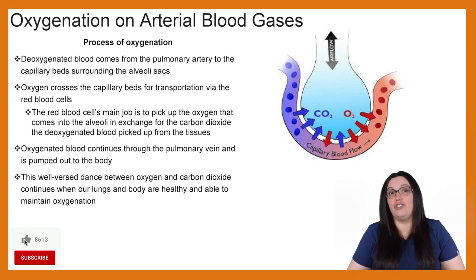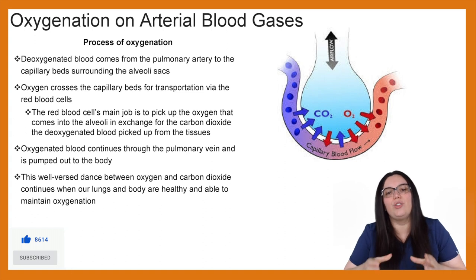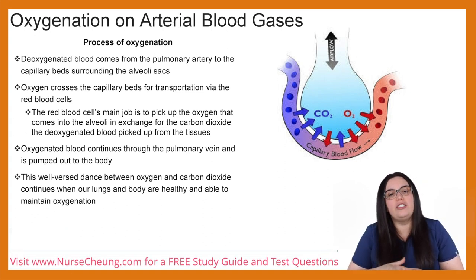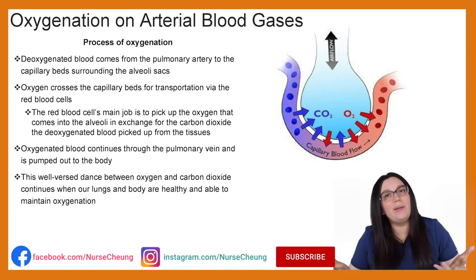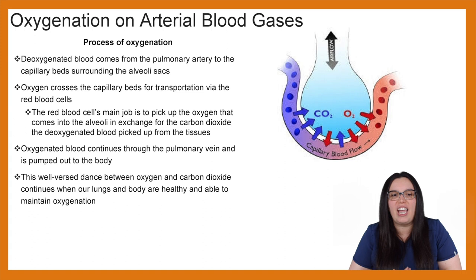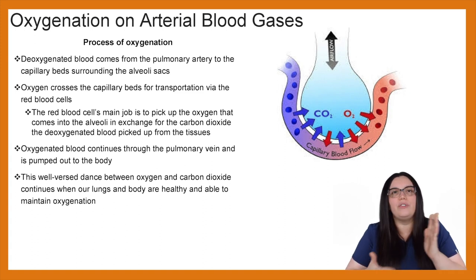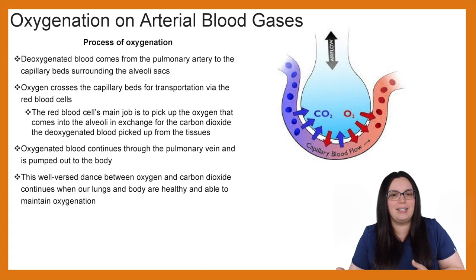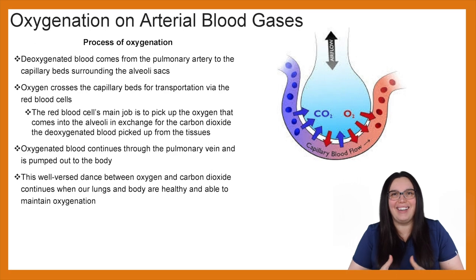Let's talk about the process of oxygenation. Deoxygenated blood comes from the pulmonary artery to the capillary beds surrounding the alveoli sac. Oxygen crosses that capillary bed via transportation of the red blood cells. The red blood cell's main job is to pick up that oxygen that comes into the alveoli in exchange for the carbon dioxide of the deoxygenated blood picked up from the tissues. Oxygenated blood then continues through the pulmonary vein and is pumped out to the body. This well-versed dance between oxygen and carbon dioxide continues when our lungs and our body are healthy and able to maintain oxygenation.